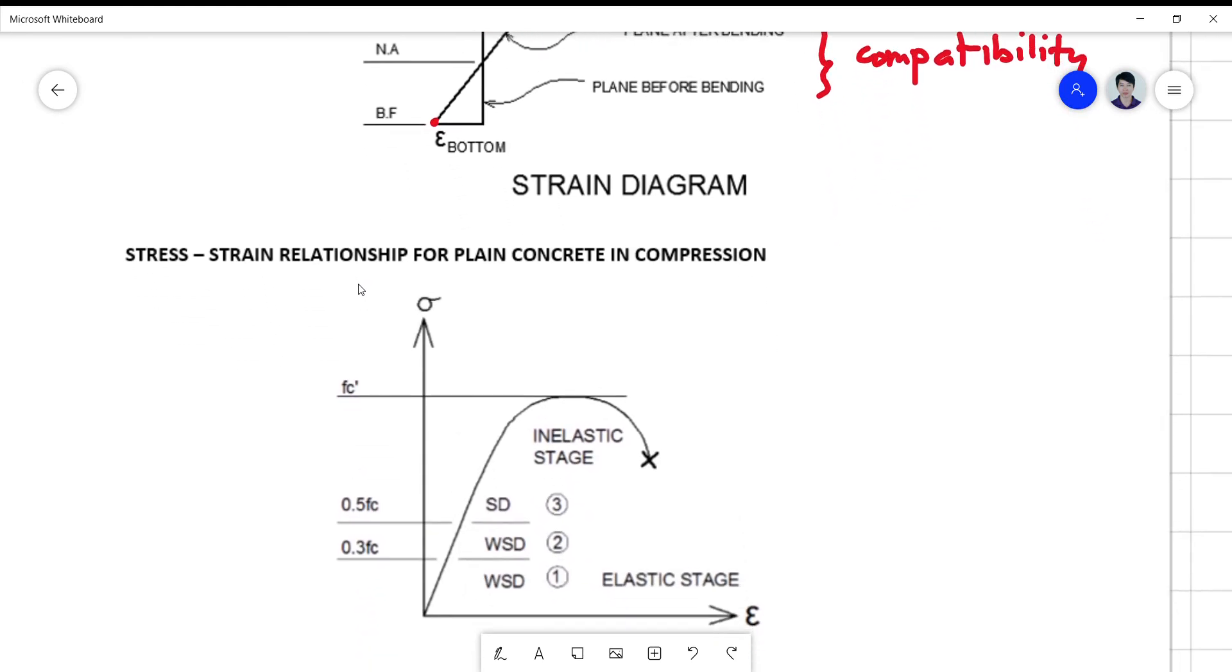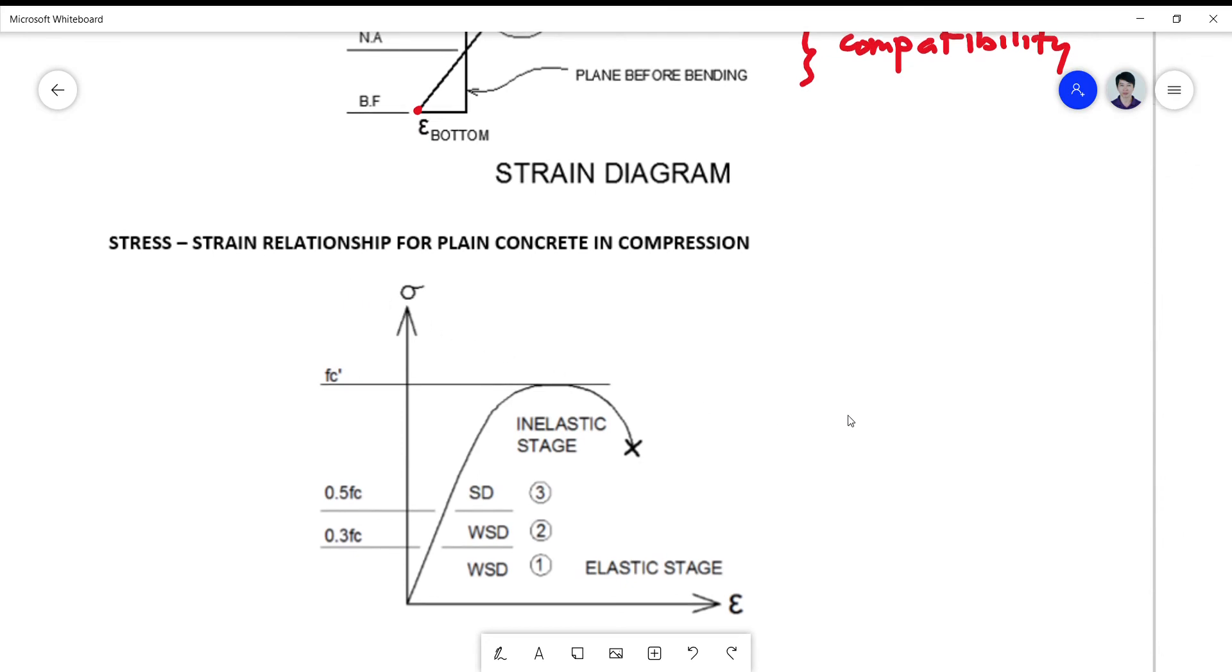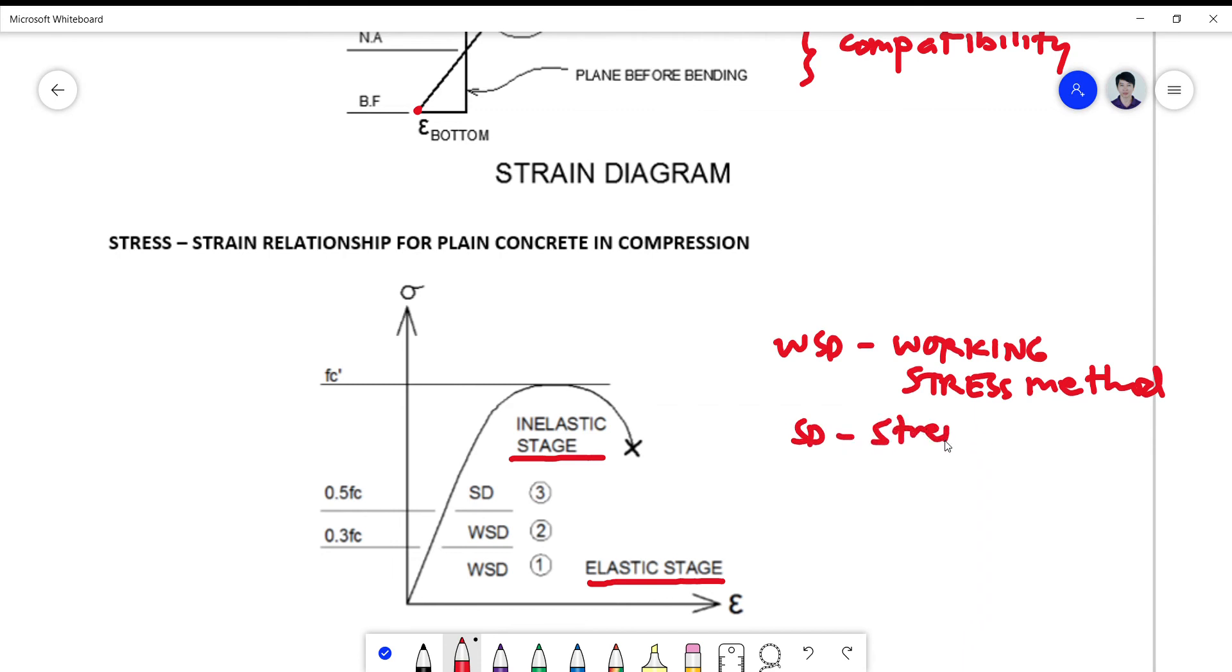The stress strain relationship for the plain concrete section: we have studied in your concrete properties that there are two stages in the behavior. The first stage is what you call the elastic stage, and the second stage is what you call the inelastic stage. So for the elastic stage, there are two sub-stages which support the working stress design procedure. So your WSD is actually the working stress method, and your SD is the strength design method.